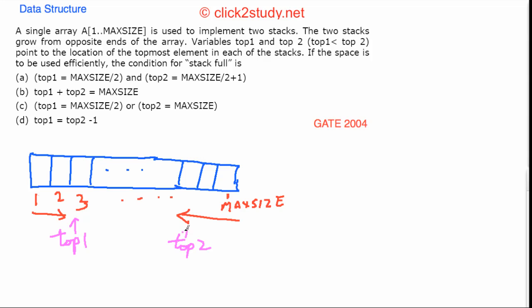As you keep pushing elements, top1 keeps moving to the right and top2 keeps moving to the left, always pointing to the topmost element. The condition is that you have to use the space efficiently — you should be able to use as much space as possible.